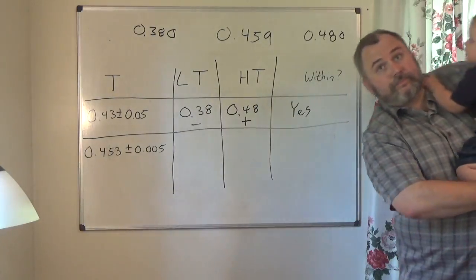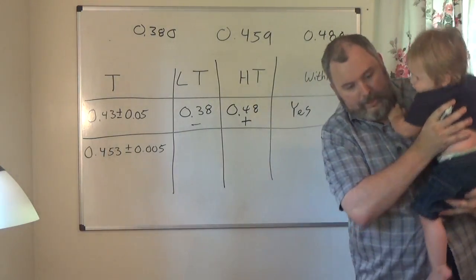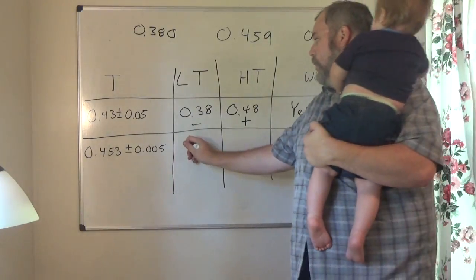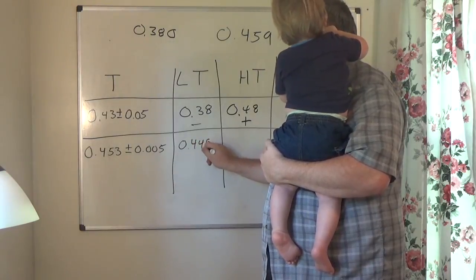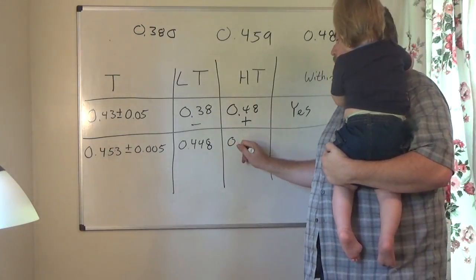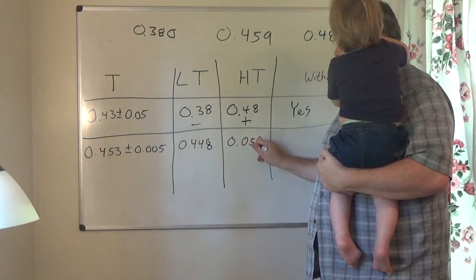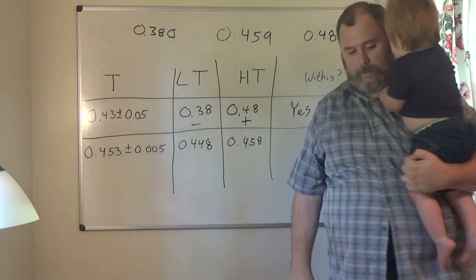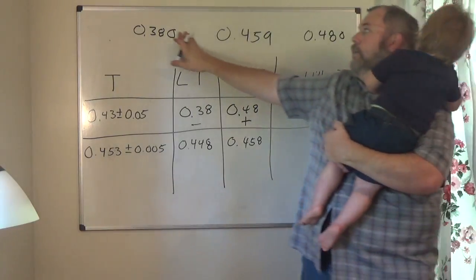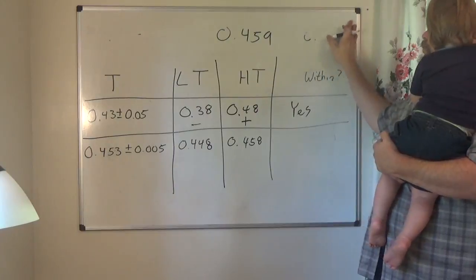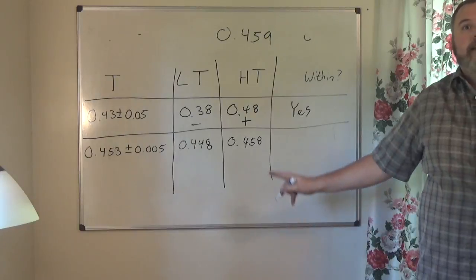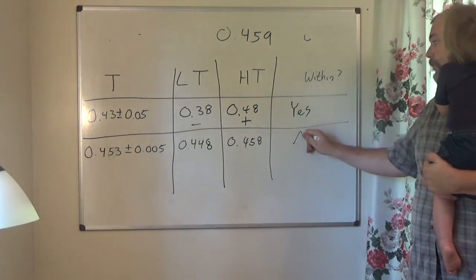Try the next one on your own. When you find the low side you should have gotten 0.448, and the high side should be 0.458. Does 0.459 fall between these two numbers? No, it does not — it's actually higher than 0.458. So the answer is no, it does not fall within the tolerance range.